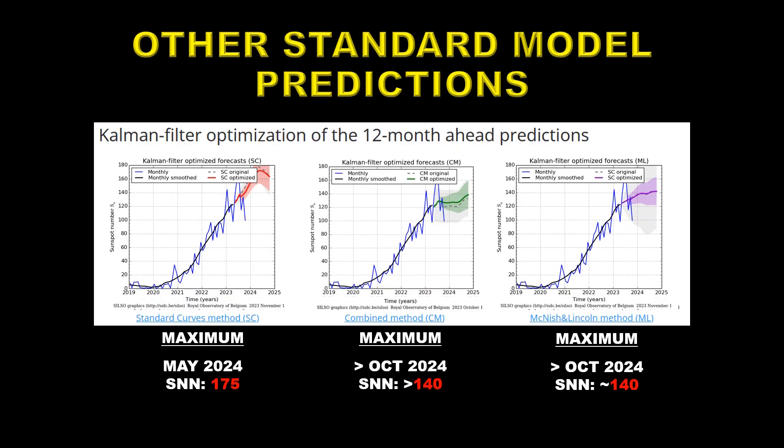Here are the models predicting what the solar cycle is going to do, updated from last month. The first is the standard curves method, which peaks at about 175 in May 2024. The second is the so-called combined method, which comes up with a maximum of 140 sometime in October 2024 or after, since this only goes one year in advance. The third is the McNish-Lincoln method, which predicts a maximum of about 140 in October 2024. Those last two models are beginning to come together quite nicely — that doesn't mean they're right, but it's at least reassuring.